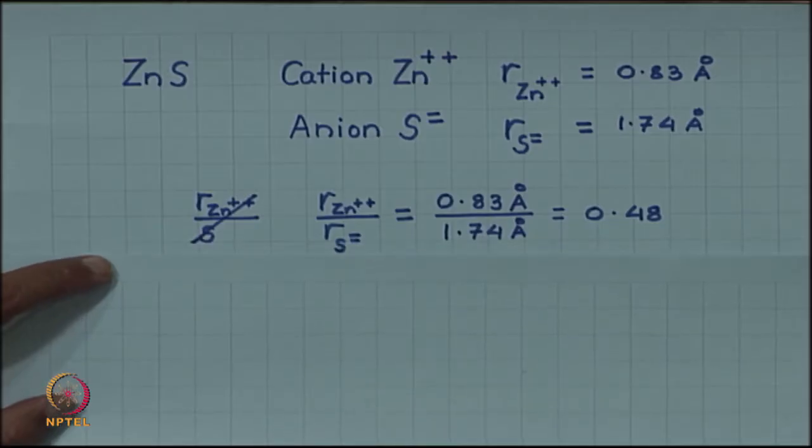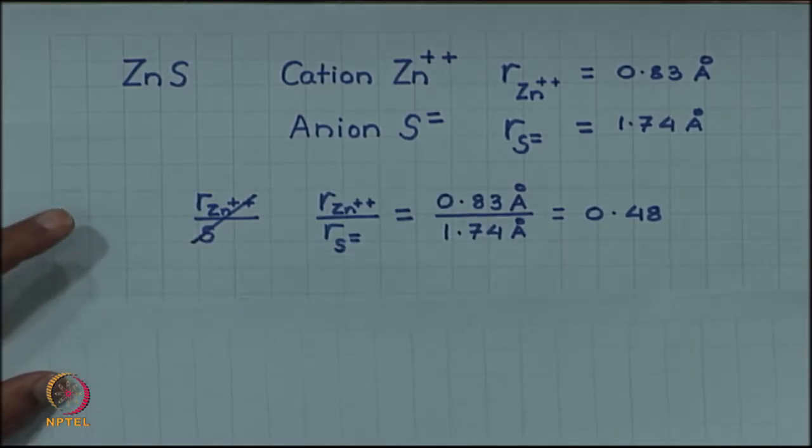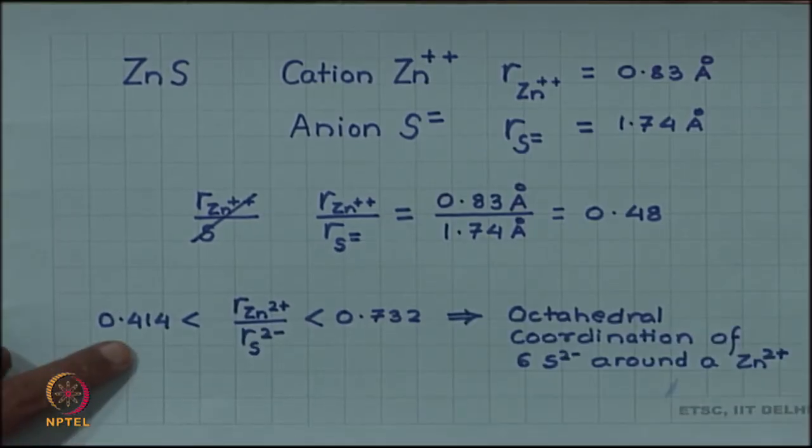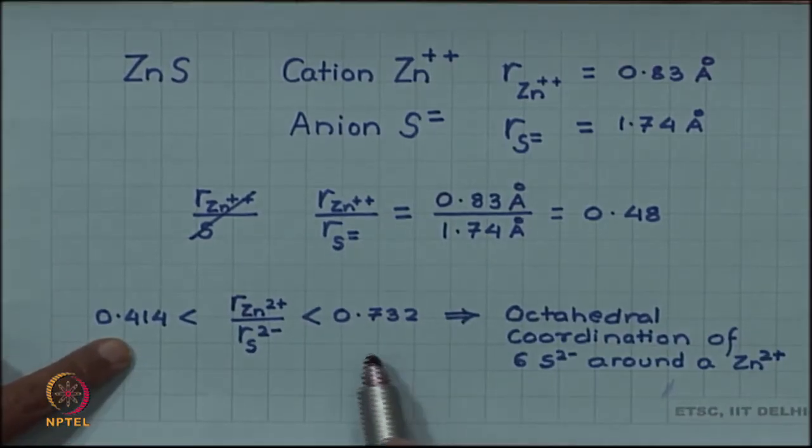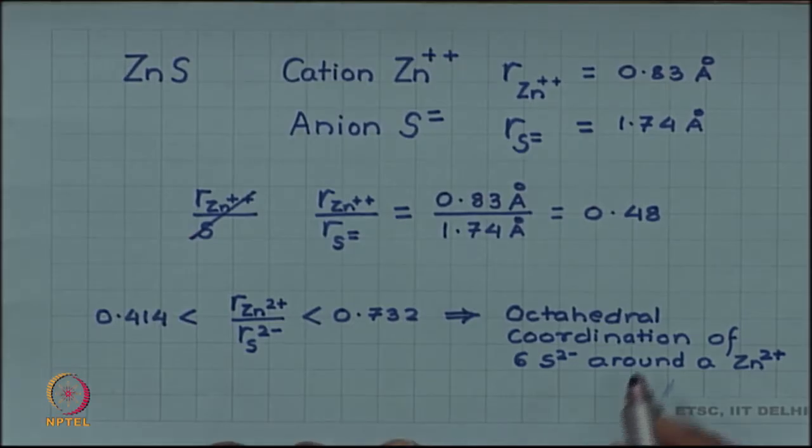If we take the radius ratio, we get a value of 0.48. This value comes between 0.414 and 0.732, which implies an octahedral coordination of 6 sulphide ions around a zinc cation.